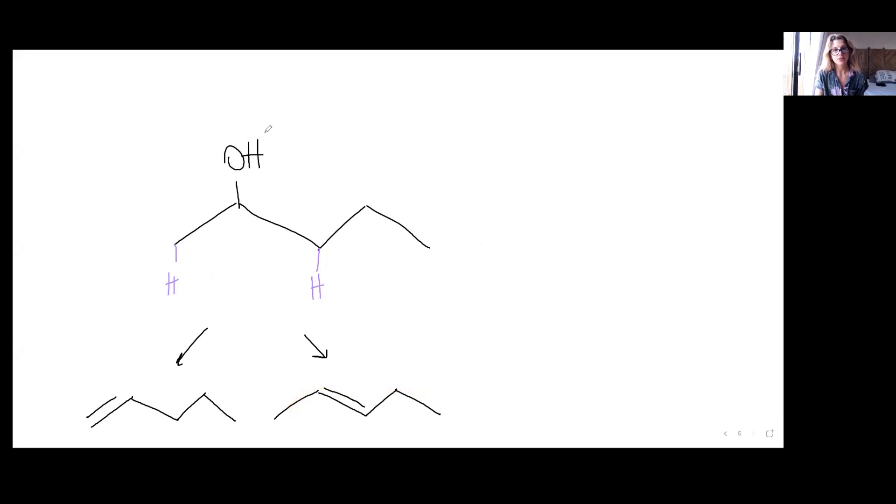And then one thing to notice is that if it's an asymmetric alcohol, probably also the alkenes won't have the same groups around—maybe yes, maybe not—but the thing is that we could also have a stereoisomer of some of the products because, as we know, alkenes can have geometrical isomers if they have different groups around the double bond.